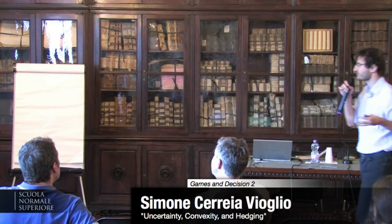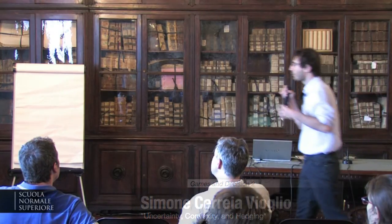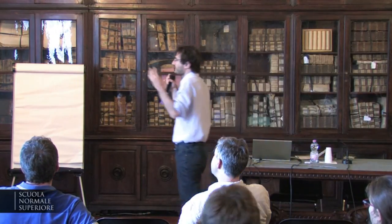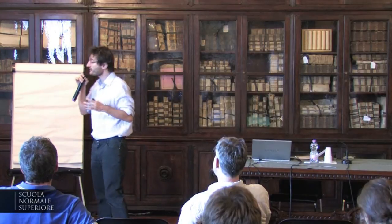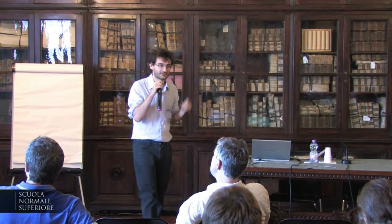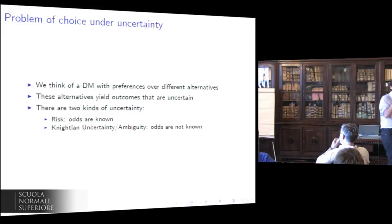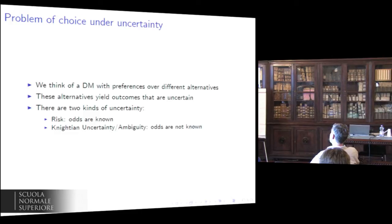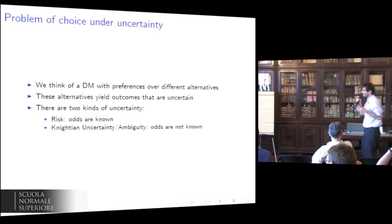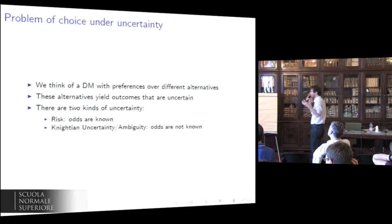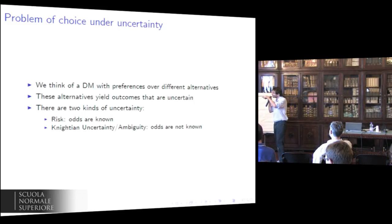So what is a problem of choice under uncertainty? A decision maker has preferences over different alternatives. These alternatives yield different outcomes. Why different outcomes? Because these outcomes are not known at the moment of choice — they are aleatory. They depend on a random realization. This is why uncertainty is present.